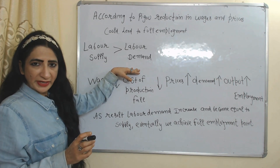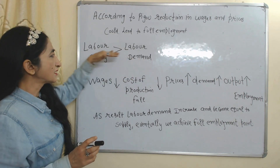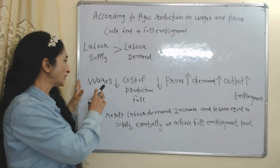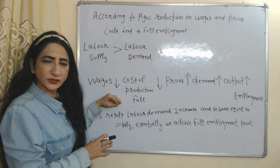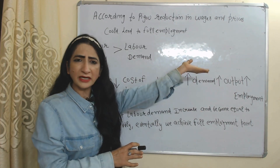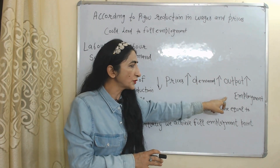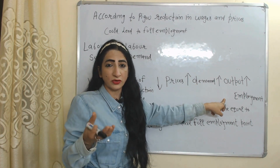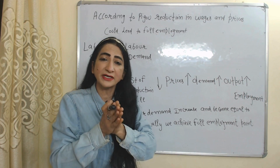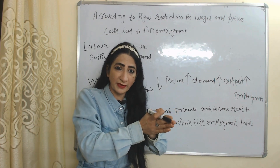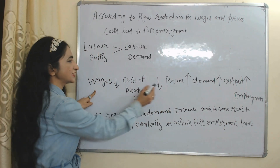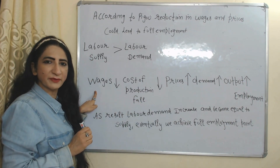Our main motive is to achieve the full employment point. Currently we have underemployment — labor demand is less but supply is more. In order to achieve full employment, we reduce wages. As wages reduce, cost of production falls, prices fall, demand increases, output increases, and employment also increases. As employment increases, labor demand increases and becomes equal to labor supply, and we eventually achieve the full employment point.